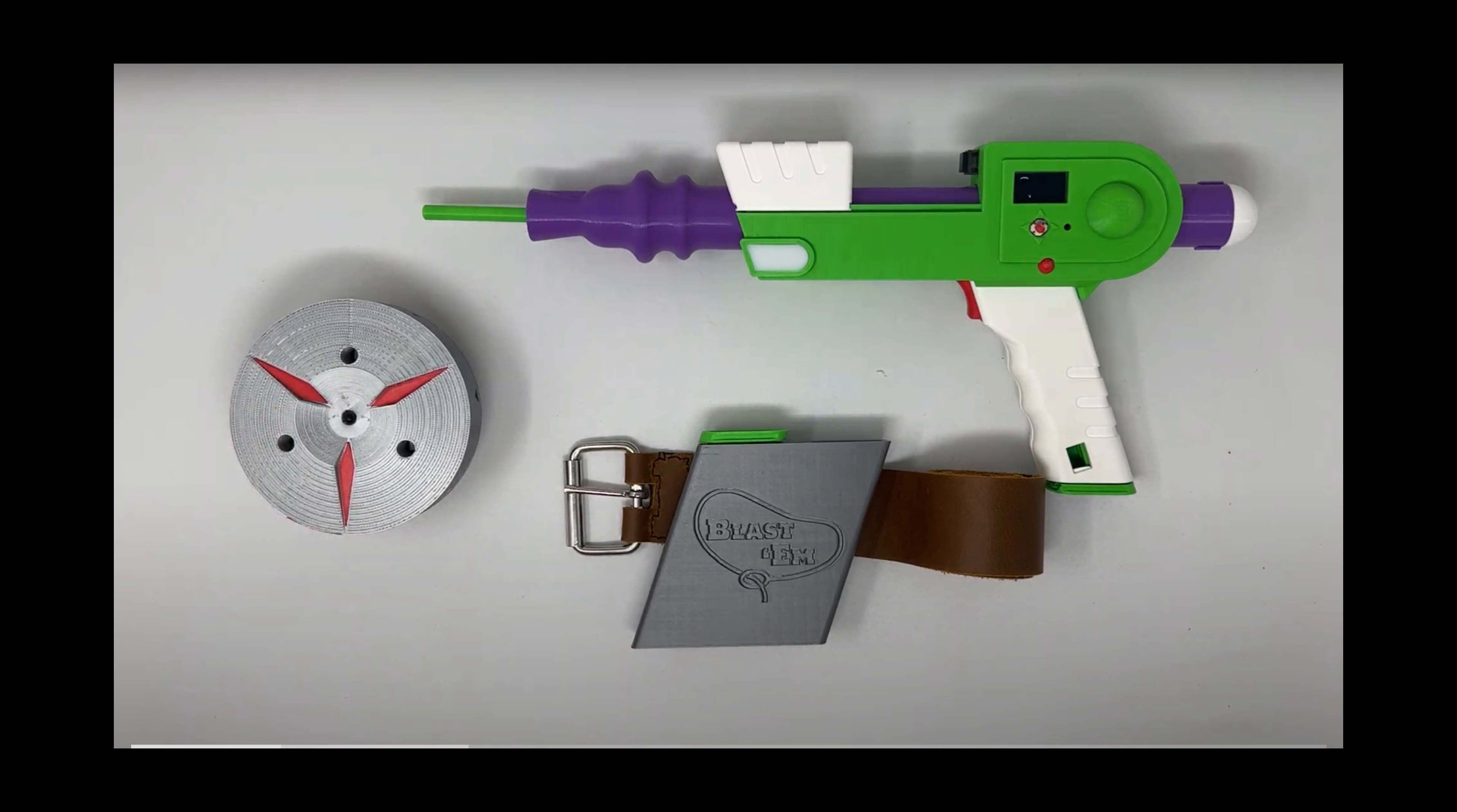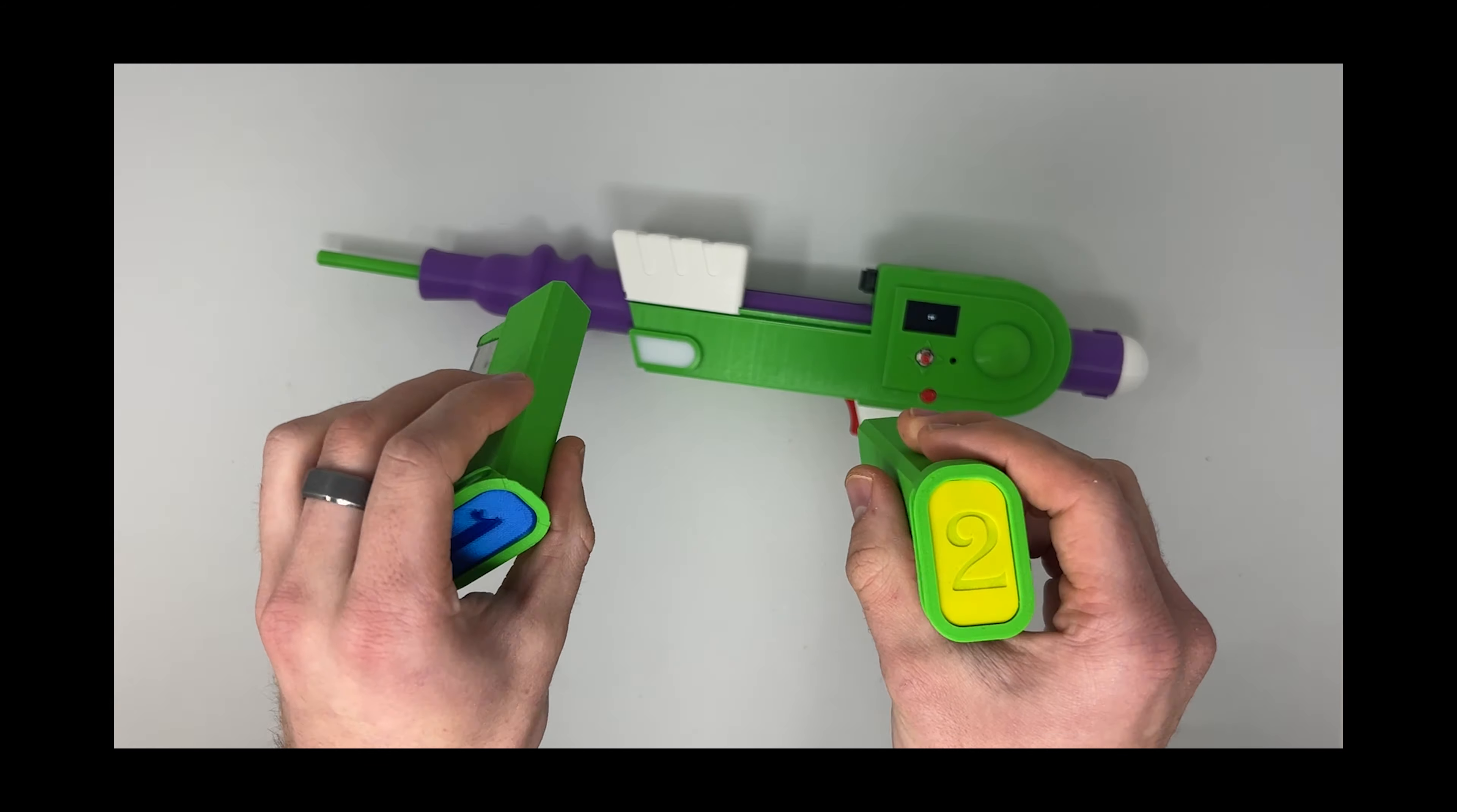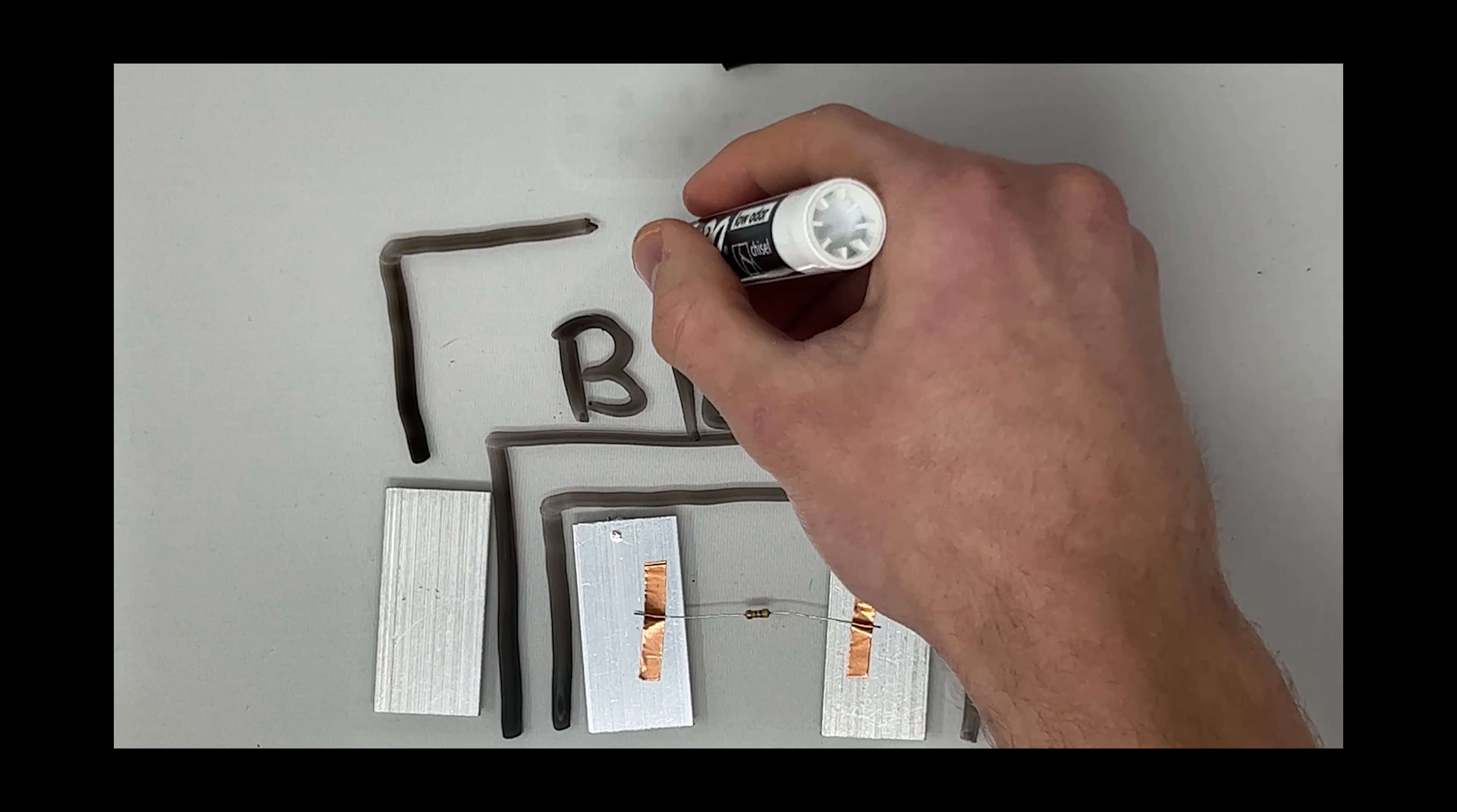Now let's take a look at how it works, starting with the reload. The rootin tootin ESP32 microcontroller in your blaster can tell which clip is inside with the help of a sneaky little trick. On the inside of the blaster we have two aluminum plates which make contact with the two matching aluminum plates on each clip. The circuit's then completed by a resistor inside the clip.